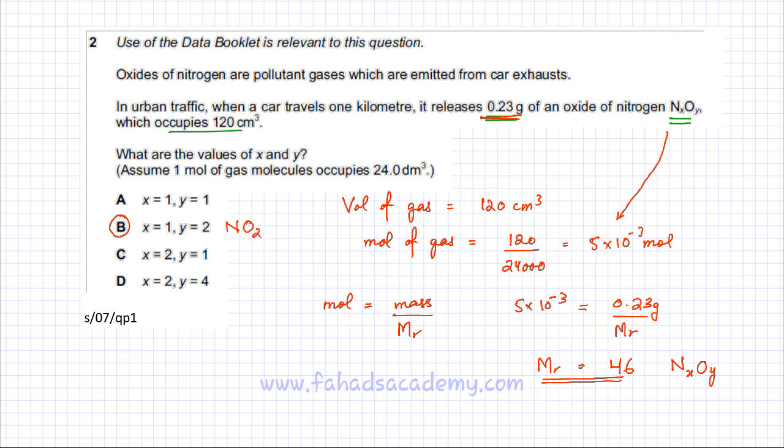If you have one nitrogen and two oxygens, so y is 2, then one nitrogen is 14, two oxygens is 32, so 32 plus 14 equals 46. The only option that's correct is option B because then the molecule NO₂ is going to have an Mr of 46.